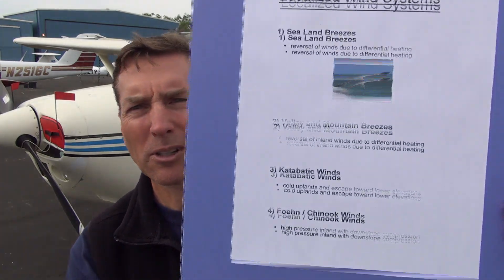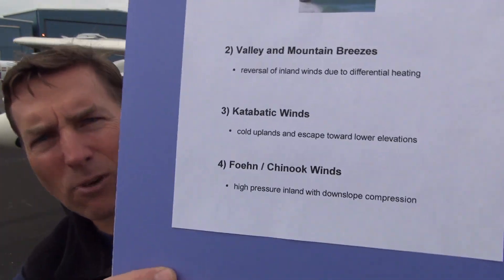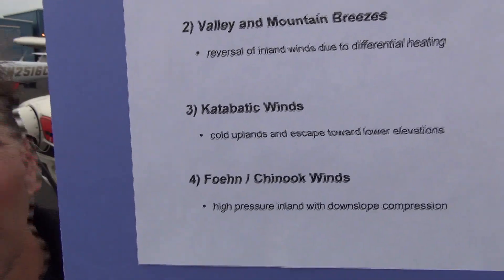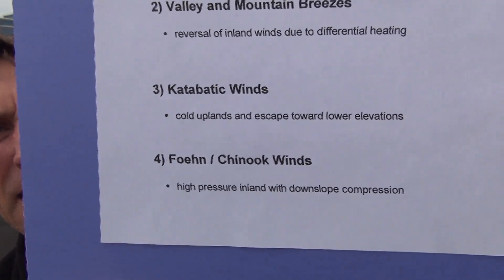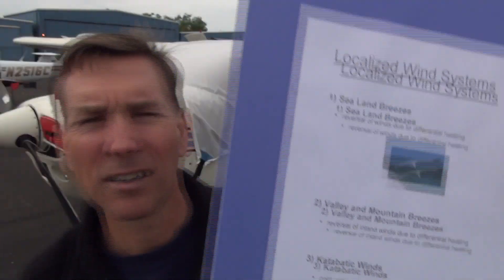These are all thermally induced. There's one other type I want to talk about — the katabatic wind. Katabatic winds are thermally induced as well. This is cold air in the Arctic or Antarctic, say at 10,000 feet up in those mountains. It's very cold and very dense, and it comes screaming down off these mountains at 100 miles per hour — making the emperor penguins even colder than they already are.